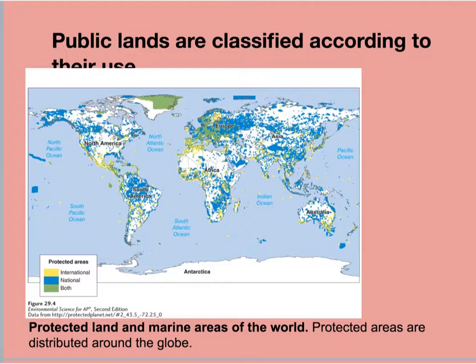These areas are well-protected marine areas that you can see on the map. There are both international and national categories for this protection. Protected areas are distributed around the globe. In this diagram, yellow is international, blue is national, and green represents areas considered both national and international protected areas.